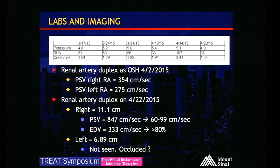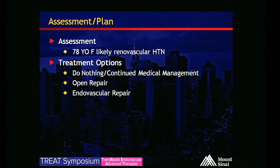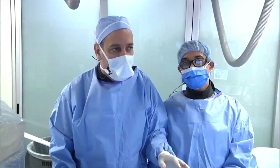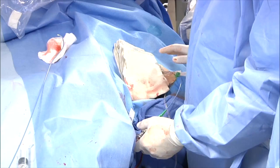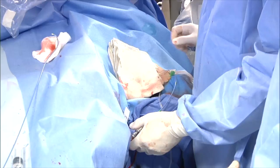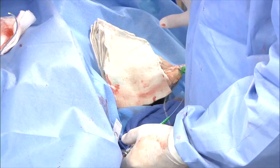We have a 78-year-old female with likely renovascular hypertension given four medications and difficult-to-control blood pressure. Her options included continuing medical management, open repair, or endovascular repair. In the patient's left wrist we have a six-French slender sheath — that's probably the largest sheath I put in to do these cases. The slender sheath has been a phenomenal advance and is really our go-to sheath for peripheral vascular interventional cases from a radial approach.